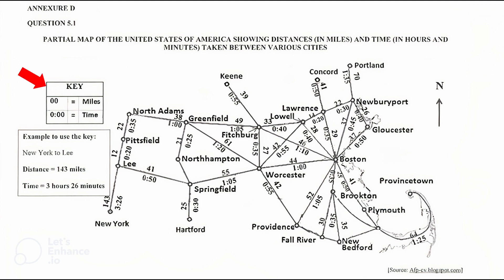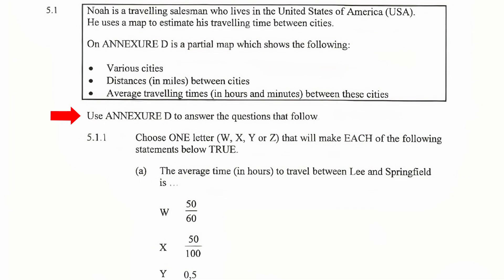In Annex D we are given a note that displays the key for making a distinction between distance and time. We are given an example of how to use this key: taking the route from New York to Lee, the distance is 143 miles and the traveling time is 3 hours and 26 minutes. We are instructed to use Annex D to answer the questions that follow.